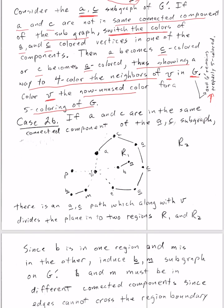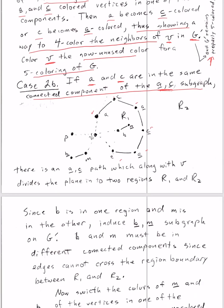But what if, case 2b, what if a and c are in the same connected component of the azure chartreuse subgraph? We illustrate that here, where a has some kind of alternating azure chartreuse path to c. If that is what happens, let us consider also the edge that had been connected to a and to c from v. If a and c are in the same azure chartreuse subgraph, that means there's an a-c path, which along with v divides the plane into regions r1 and r2. There they are, r1 and r2.